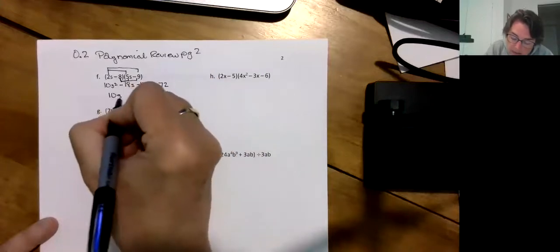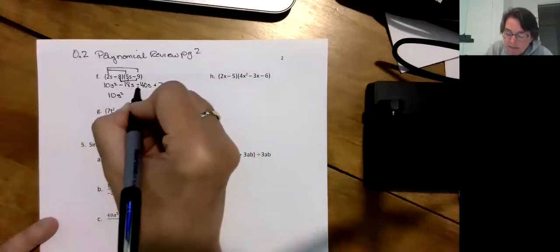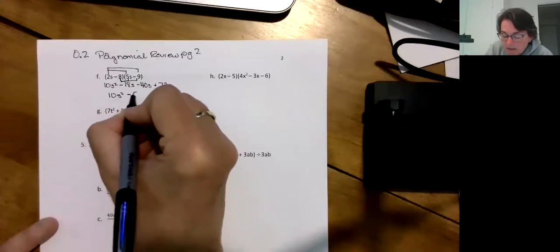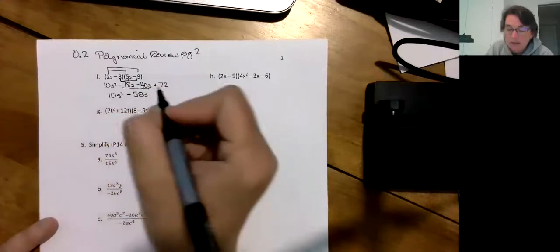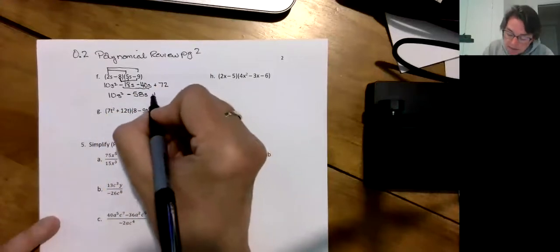So 10s squared. Now minus 18 and minus 40 is going to be minus 58. And notice it's just plain s because at this point I'm just adding. And then plus 72.